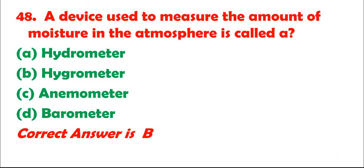Question 48: A device used to measure the amount of moisture in the atmosphere is called: A. Hydrometer. B. Hygrometer. C. Anemometer. D. Barometer. Correct answer is B.